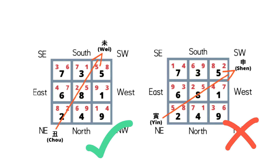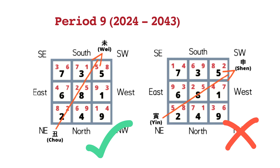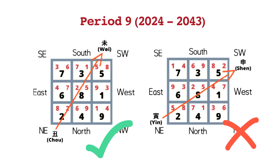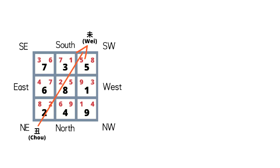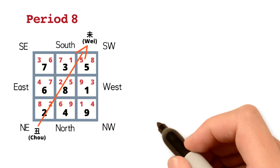So what will happen to Period 8 houses when Period 9 arrives in 2024? First, we need to know where does the sitting star and facing star of each sector come from. As we can see, the sitting stars and facing stars on both charts are quite different. I will be using the first example to demonstrate how each of the stars fly, step by step.